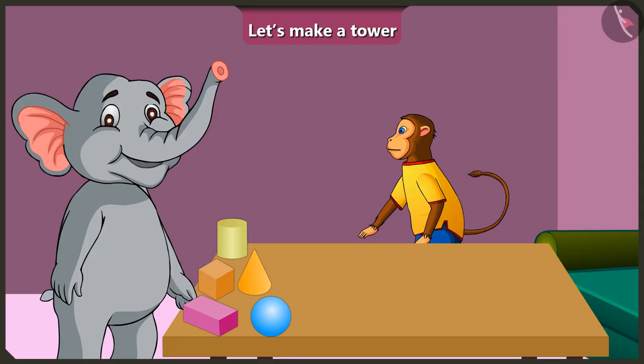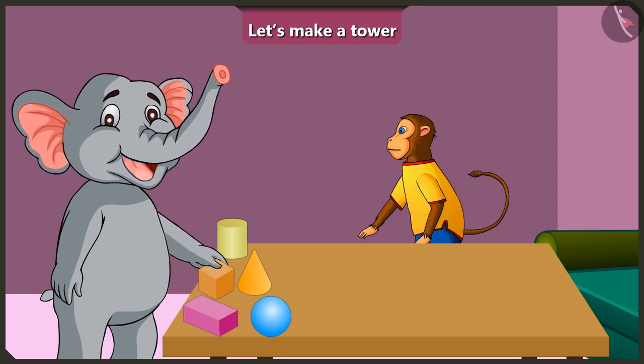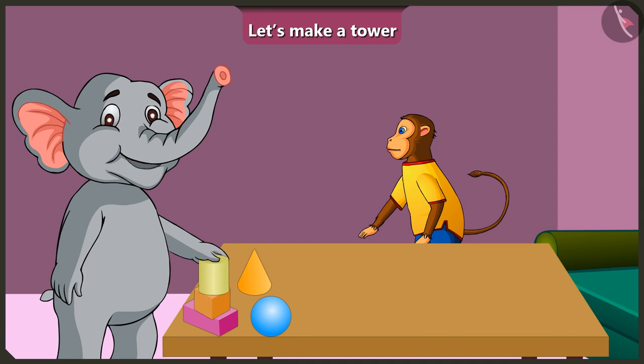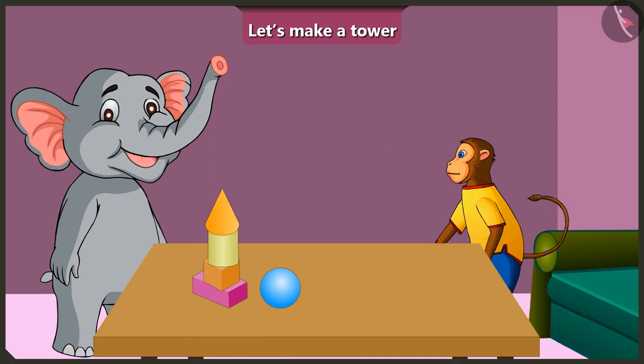Now I understood, I will make it again. This cuboid at the bottom, above it the cube, above it this cylinder and above it this cone shape. See, the tower is made. Now I understood that we cannot make a tower using round objects and that cone shaped objects should only be placed on top of the tower.